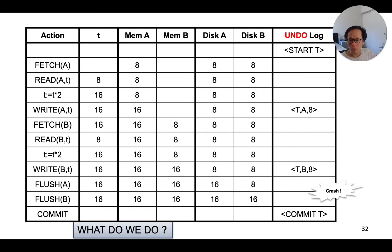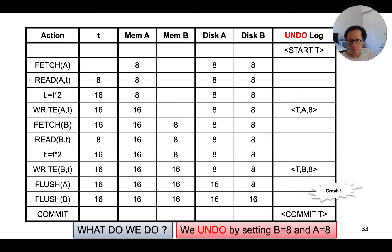What is the right thing to do? In this case, we have a log that consists of a start entry along with two update entries, but no commit entry yet. So that means our transaction will be considered as incomplete. Remember, in undo logging, the idea is to undo all such incomplete transactions. So we undo this transaction by setting B and A back to 8 on the disk — just as if this transaction has never executed at all.